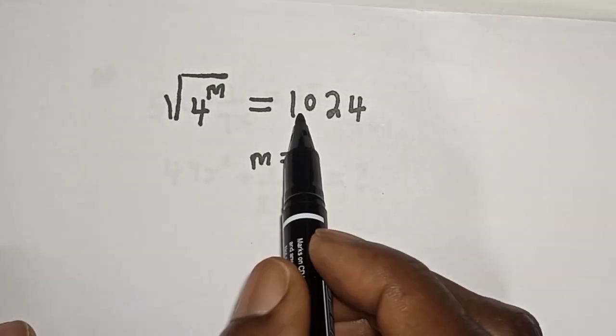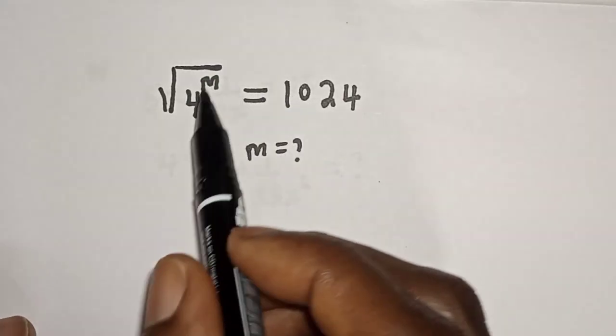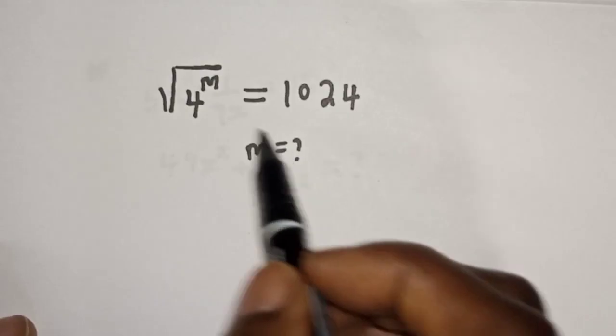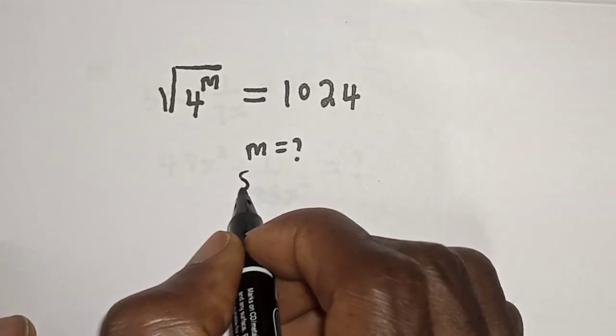Square root of four to power m is equal to 1024. What is the value of m? Hi everyone, welcome to my class. In this class we want to find the value of m from this equation. But before we proceed, please don't forget to like, share, comment, and subscribe.